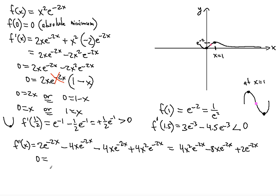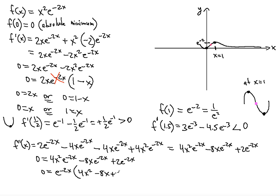We set the second derivative equal to zero. Since e^(−2x) is never zero, we can factor it out and disregard it — we're effectively dividing by e^(2x). That leaves us with 0 = 4x² − 8x + 2. Dividing both sides by 2 gives 0 = 2x² − 4x + 1.